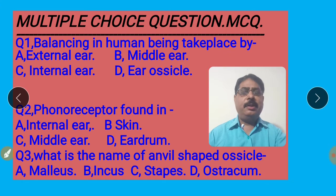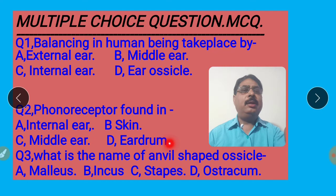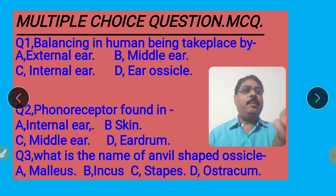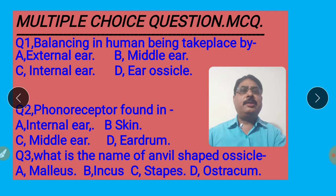Question number 2: Phonoreceptor found in — internal ear, skin, middle ear, and eardrum. Phonoreceptor means hearing organs present in the internal ear, so the right answer is A, internal ear. B — skin does not play any role. Eardrum does not play any role in hearing. The middle ear contains three ear ossicles called MIS: malleus, incus, and stapes. So the right answer is option A. I shall click option A for the right answer.